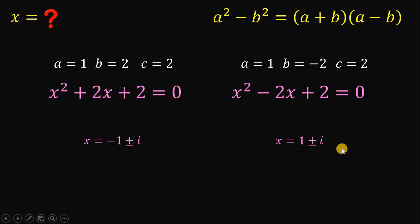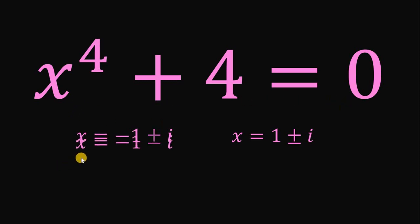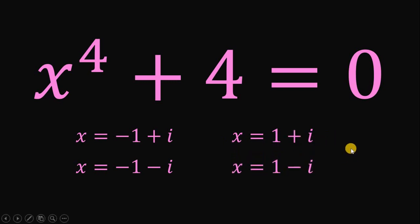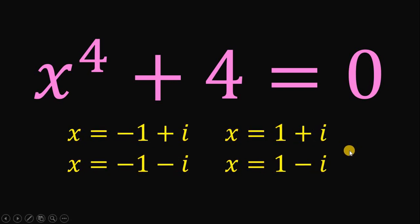Therefore, we have 4 possible values for x in the equation x raised to the 4th power plus 4 equals zero. Namely, x equals negative 1 plus i, negative 1 minus i, 1 plus i, and 1 minus i. These are all the possible values for x. And as always, we are done.